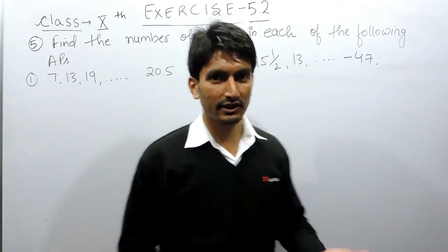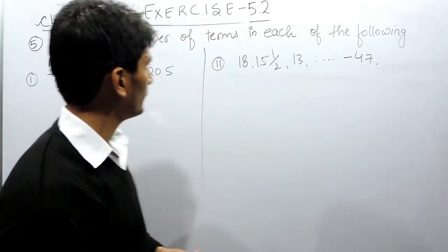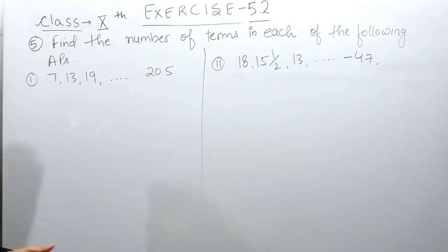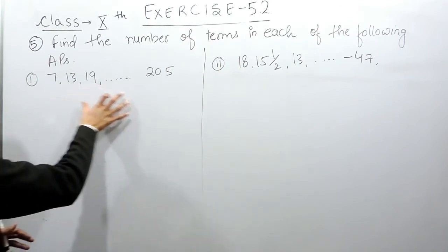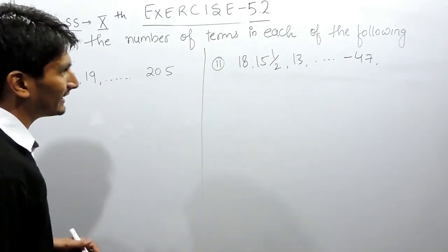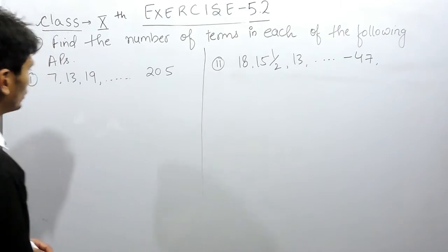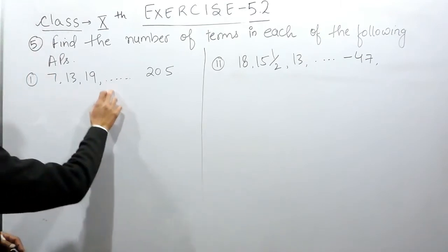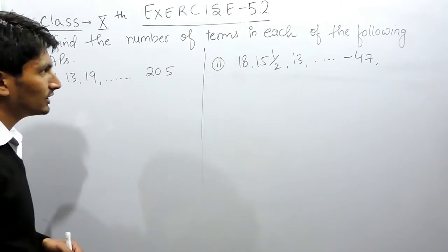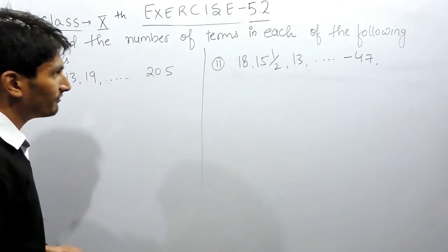Hello everyone. In this video we are going to solve question number 5 of exercise 5.2. You have to find the number of terms in each of the following APs. The first and second APs are given to you, and you have to find out how many terms there are if the last term is 205.